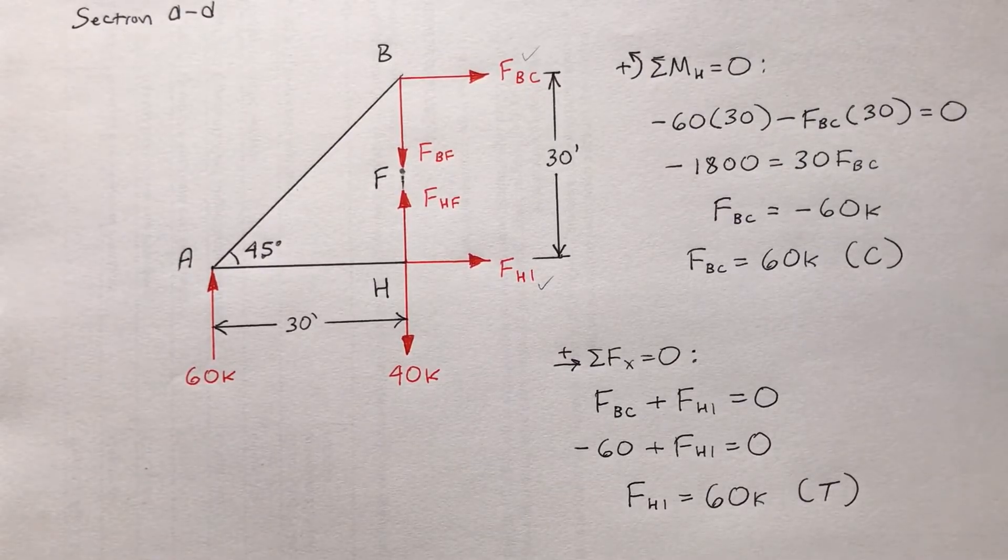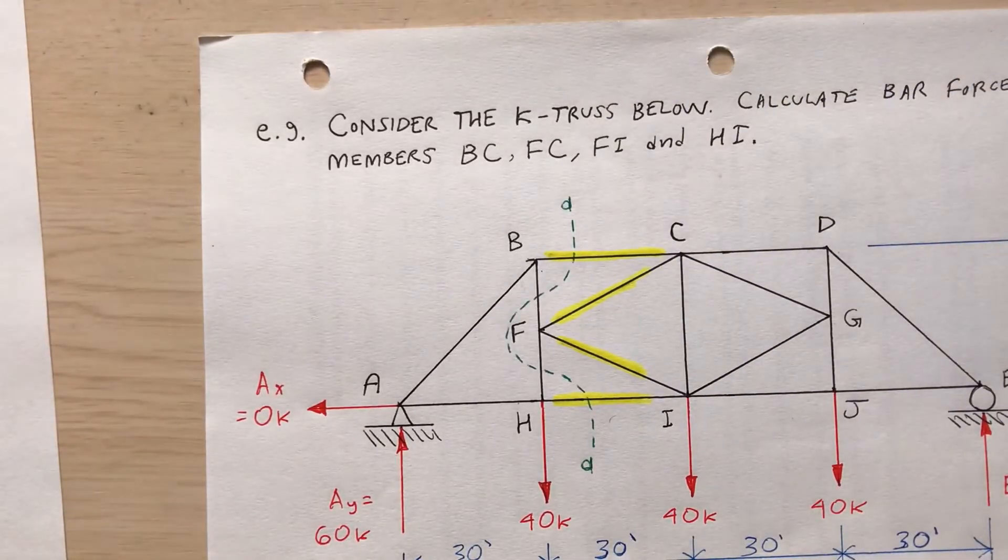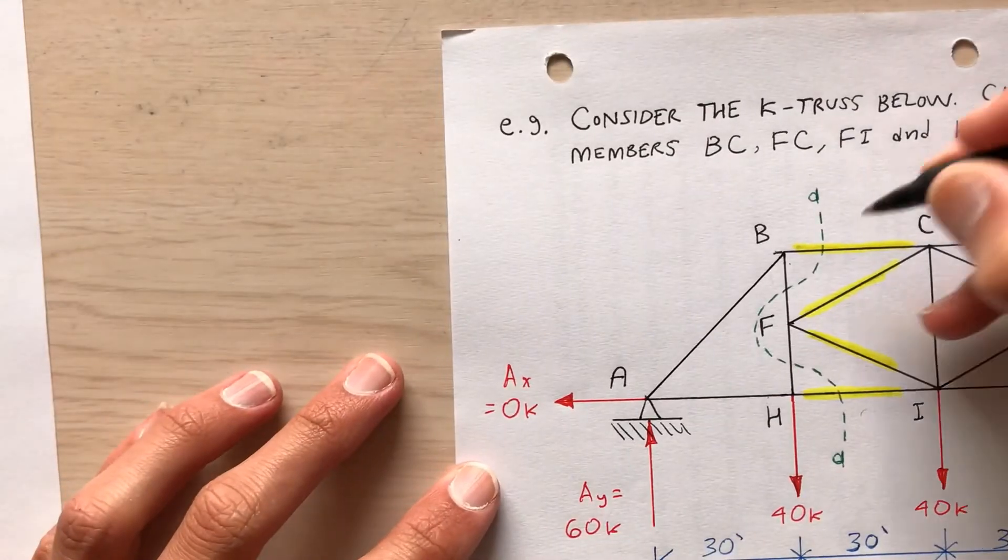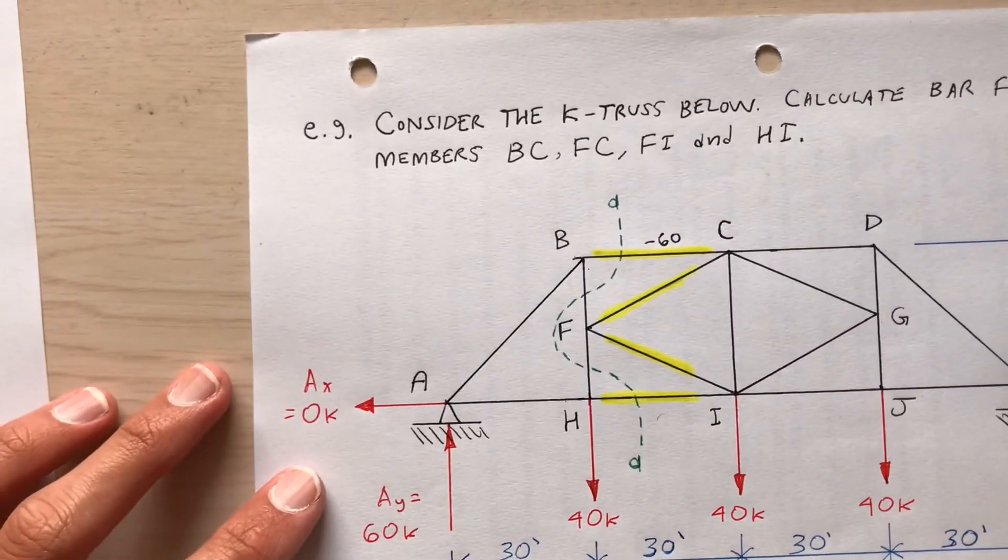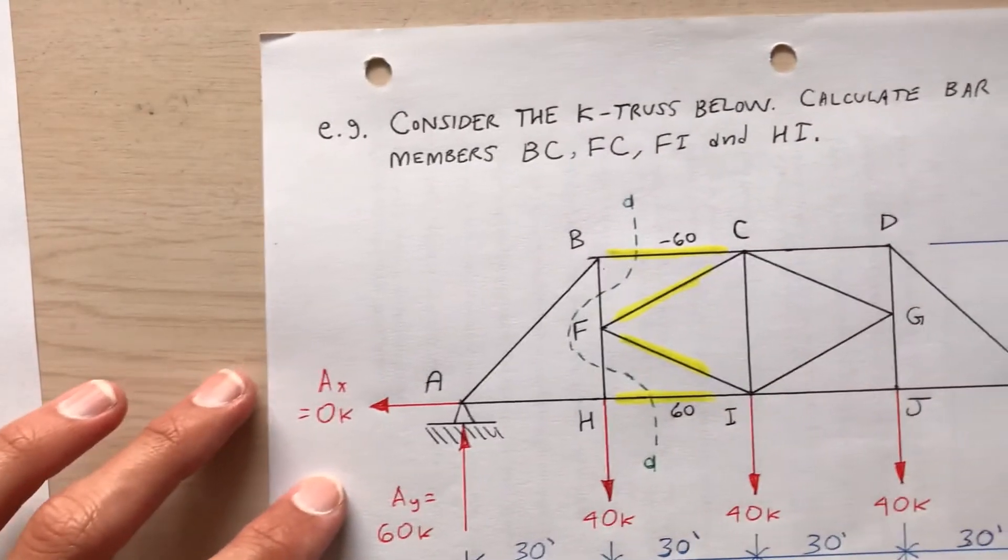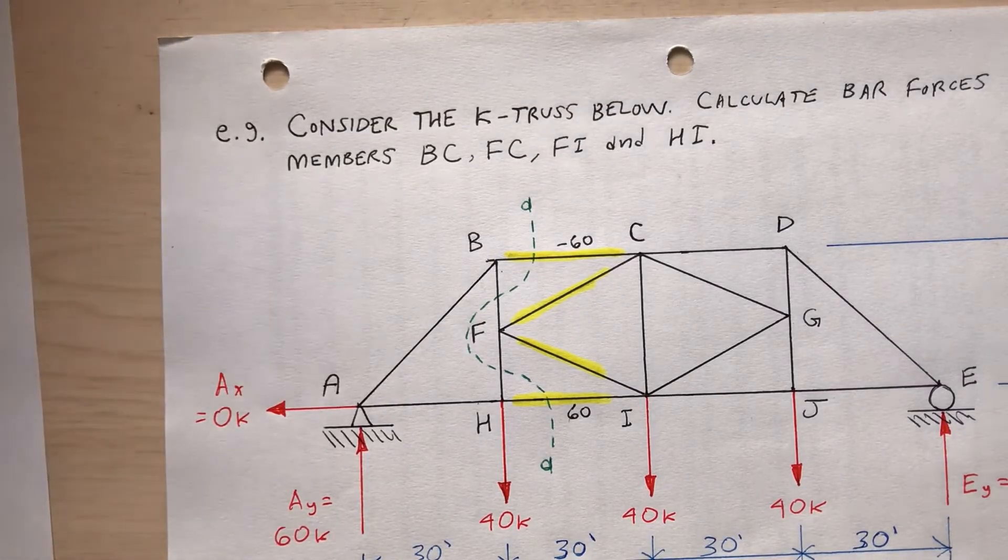Okay, how does that look? Okay, let me go back to my main figure. Okay, here's what I started with. Okay, so F sub BC was negative 60. So put negative 60 on here. Okay, and F sub HI positive 60. How's that? What about the other two bar forces? How do I find those?